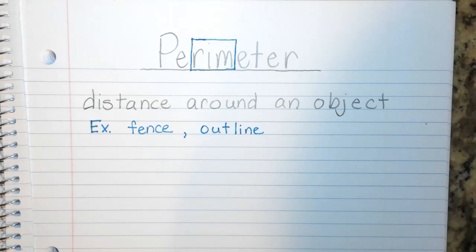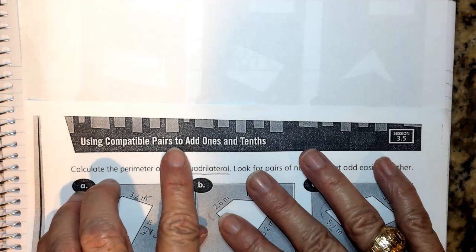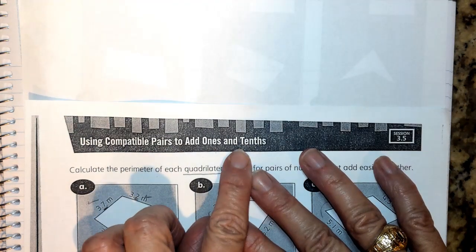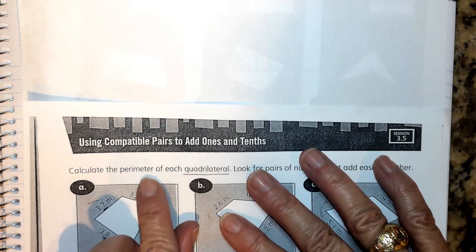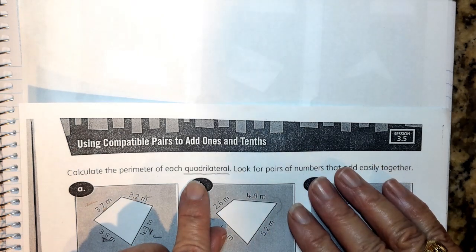So you should have a paper that you have received and it looks like this. It says using compatible pairs to add ones and tenths, but it is also calculating the perimeter of each quadrilateral.